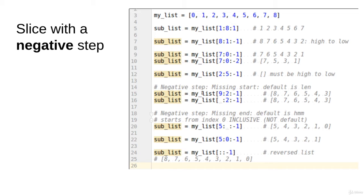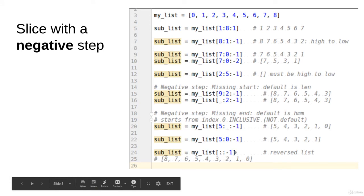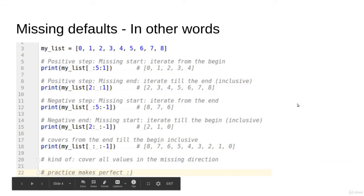The tricky part comes with missing values in the negative step. If the start is missing, the default is the length — that makes sense. The tricky case is when the end is missing: the default isn't zero in the usual sense — zero will actually be included. So [5::-1] gives you five, four, three, two, one, zero. This is not the same as [5:0:-1] because zero would be excluded in that case. The negative step is a bit counterintuitive with the missing end. One nice thing: [::-1] reverses the whole list.